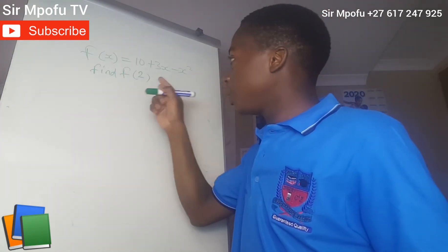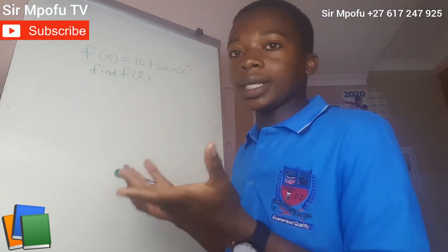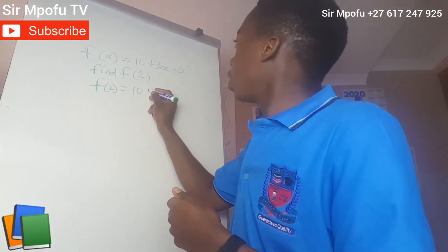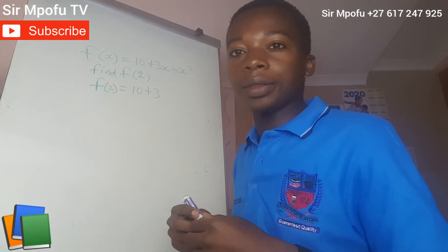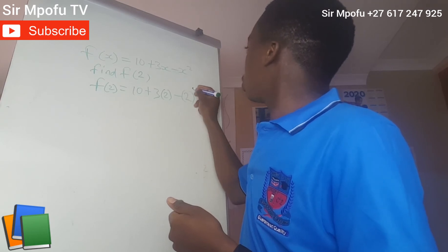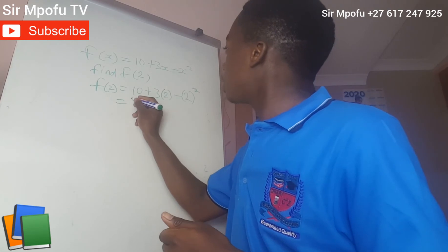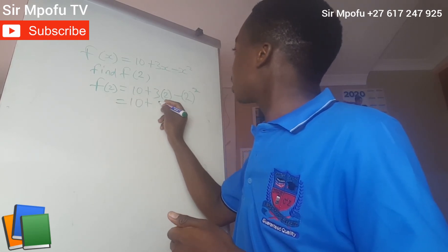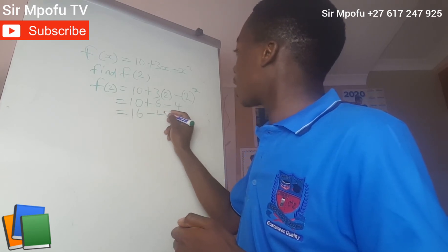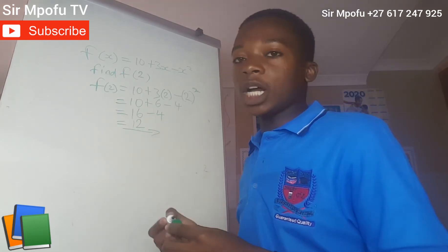Let's simplify the first part. When they say find F of 2, it's simple and straightforward — wherever there is X, you substitute X with 2. So F of 2 equals 10 plus 3 times 2 minus 2 squared. That gives 10 plus 6 minus 4, which is 16 minus 4. Our answer will be 12. This is our final answer.